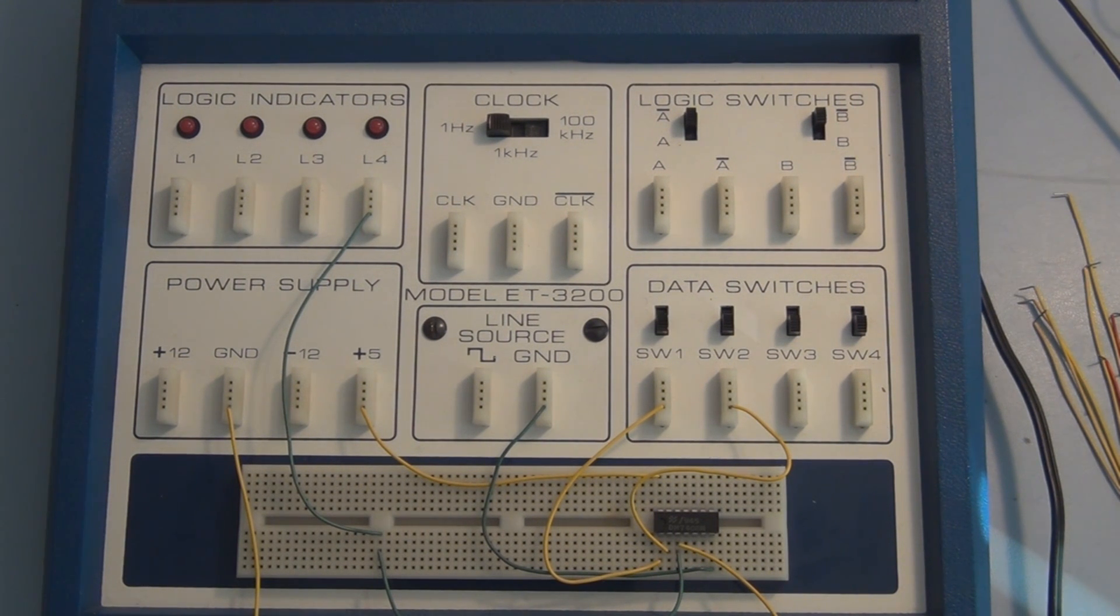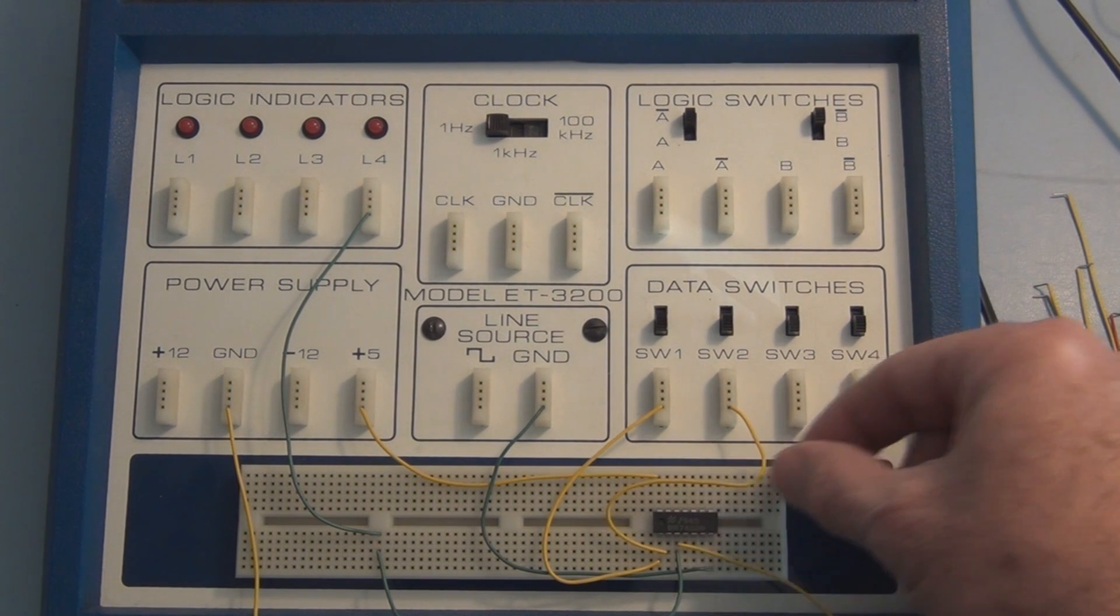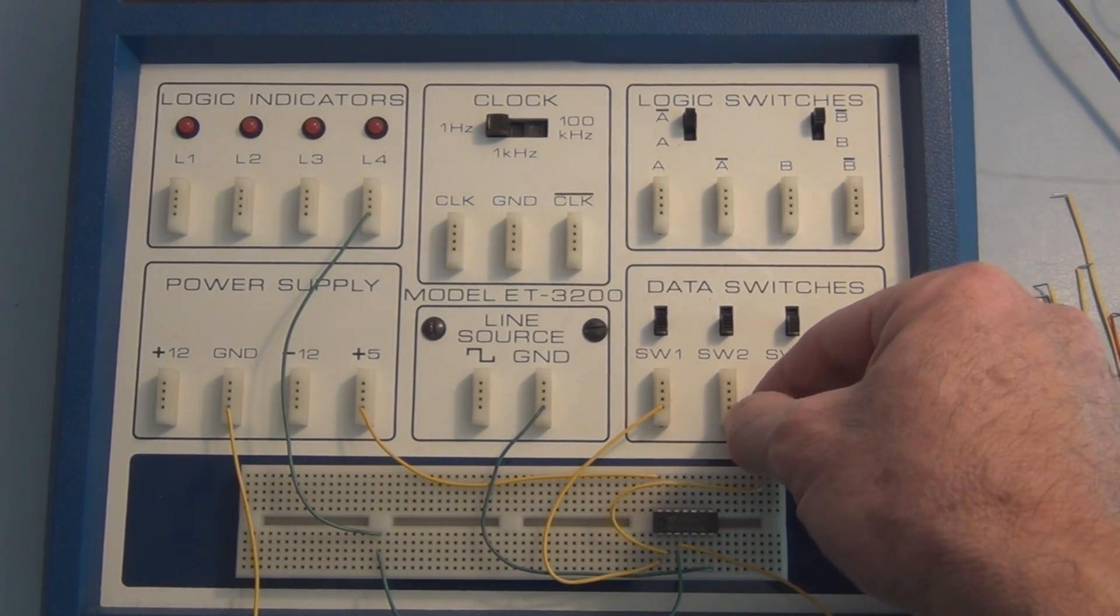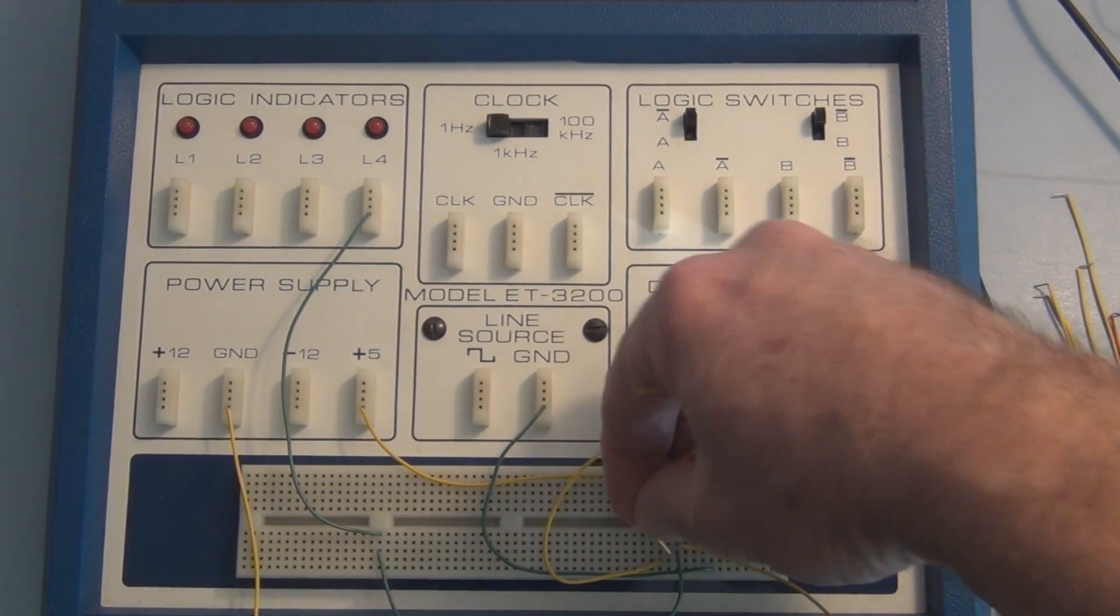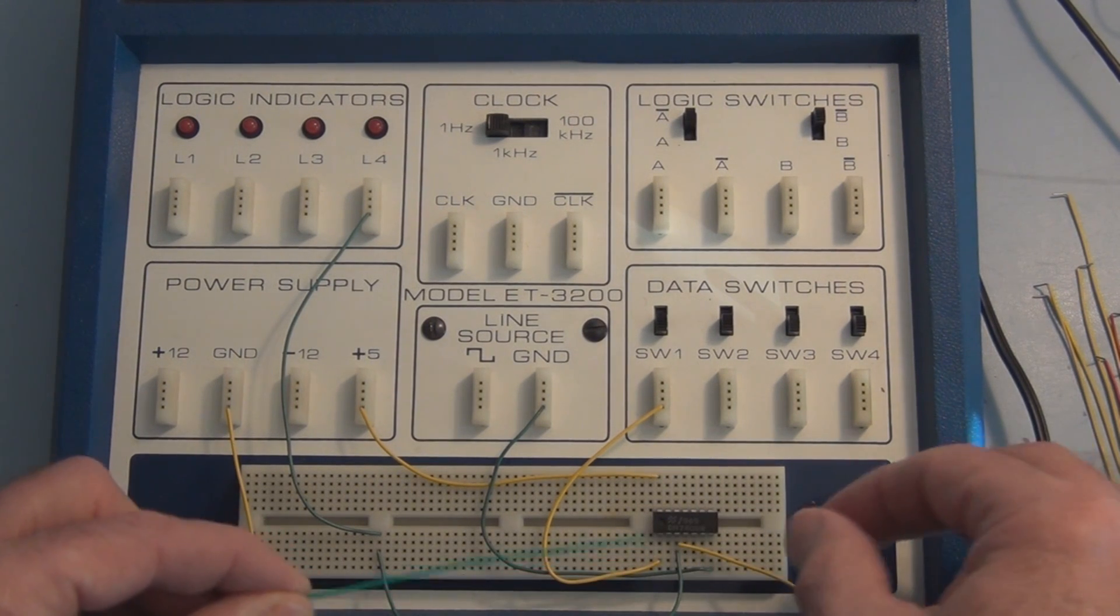Now one use of an AND gate would be to control whether you want a signal to pass through it to the output. So instead of applying a single logic level to one of the inputs, we apply a square wave. We could control whether or not that square wave gets passed through to the output.